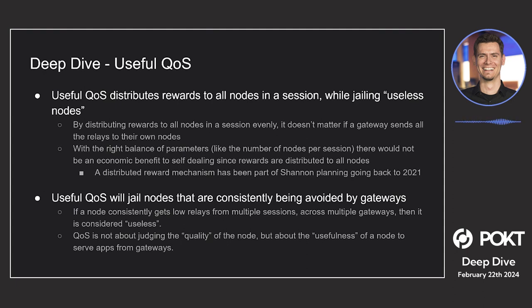Useful QoS will jail nodes that are constantly being avoided by gateways. If a node consistently gets low relays across multiple sessions and multiple gateways, it's considered useless. Right now, Grove has its own QoS — it tests all nodes in a session, and if a node doesn't meet quality standards, it doesn't send relays to that node. If that node is avoided by Grove, then goes into another session and is avoided again, you can start to see a pattern naturally developing on-chain.